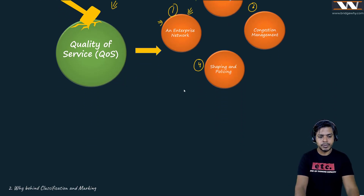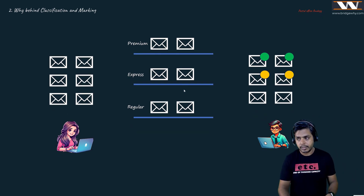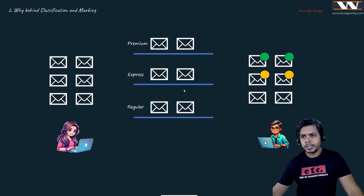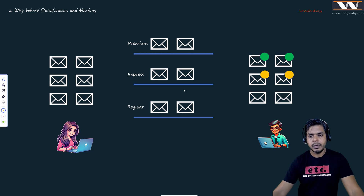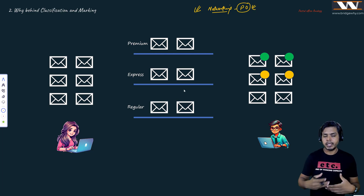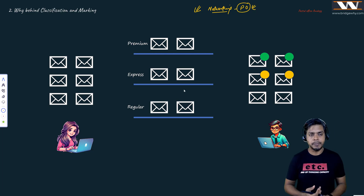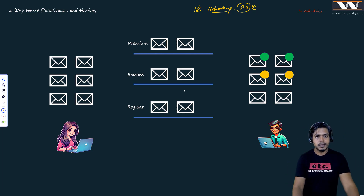Let's move to the next board: why behind classification and marking. I'm taking an example of a postal office service as an analogy, because most of the concepts of networking are pretty much close to the postal office. If you know the service well, that's going to be great. You can compare the destination address and source address with what you write on a letter.